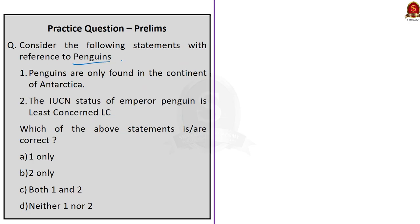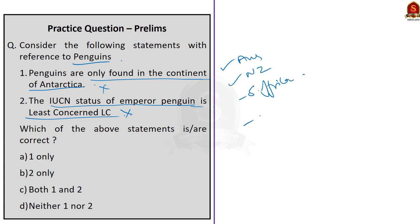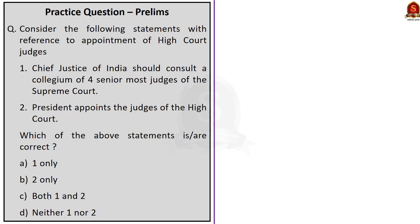Question 2 on penguins: Statement 1 — penguins are only found in the continent of Antarctica; Statement 2 — the IUCN status of Emperor Penguin is least concerned. Both statements are incorrect. We discussed that it is a myth that penguins only live in Antarctica, and the IUCN status of Emperor Penguin is near threatened. So the correct answer is option D — neither one nor two.